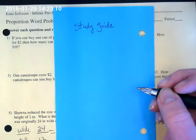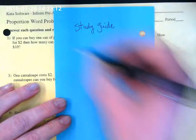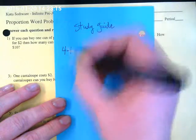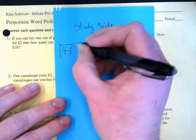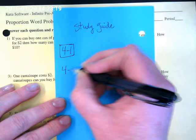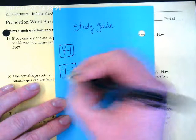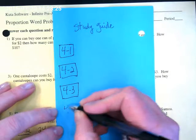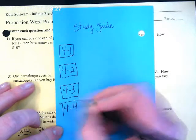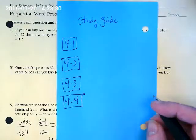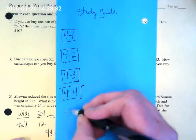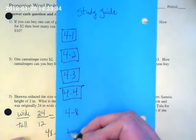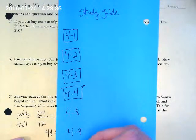We did not do all of Chapter 4. We skipped some sections. So I want you to list the sections that we did do. Here's where we skipped. We did 4-1, 4-2, 4-3, and 4-4. And then we skipped to 4-8, 4-9, and 4-10.